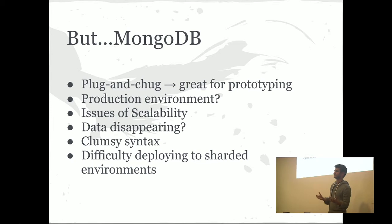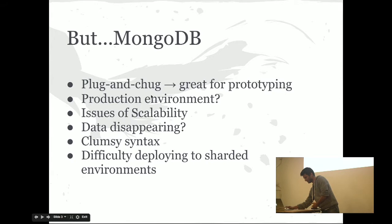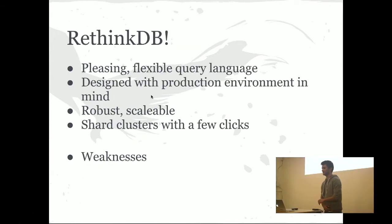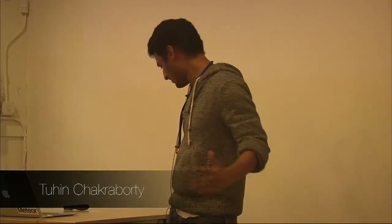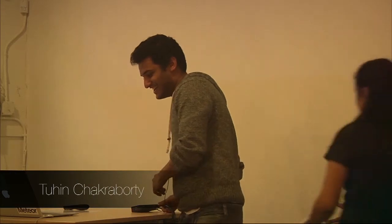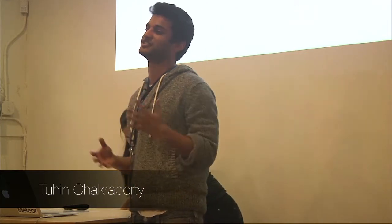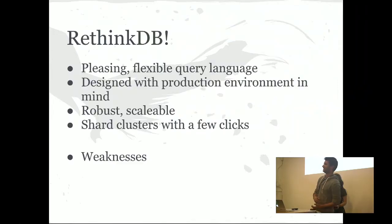There are some difficulties involved with deploying Mongo to a sharded environment. So, RethinkDB — it has an awesome syntax, it's a lot of fun to use, and it was designed with a production environment in mind. It's really robust and scalable. It's kind of like the second generation of NoSQL databases, and they like to think that they fixed a lot of the mistakes that MongoDB and CouchDB made in the first generation.